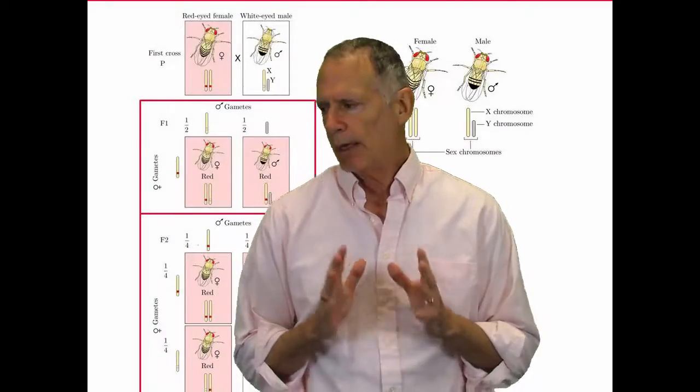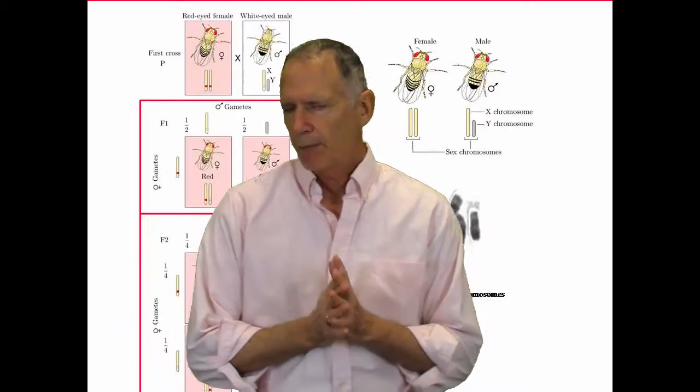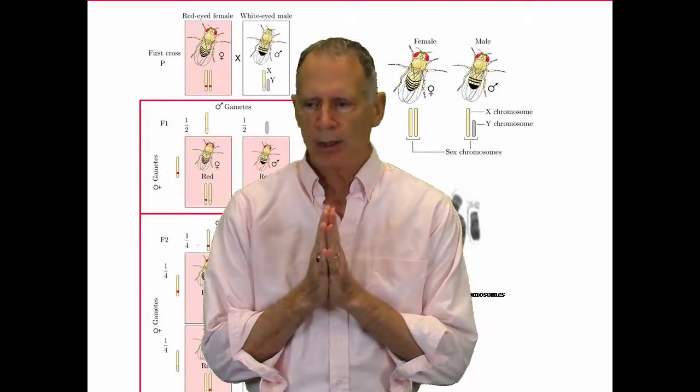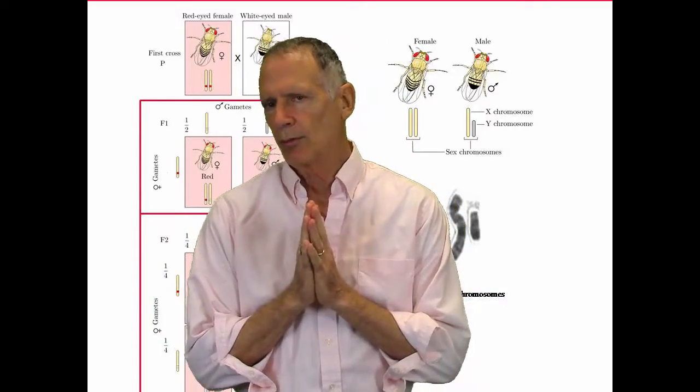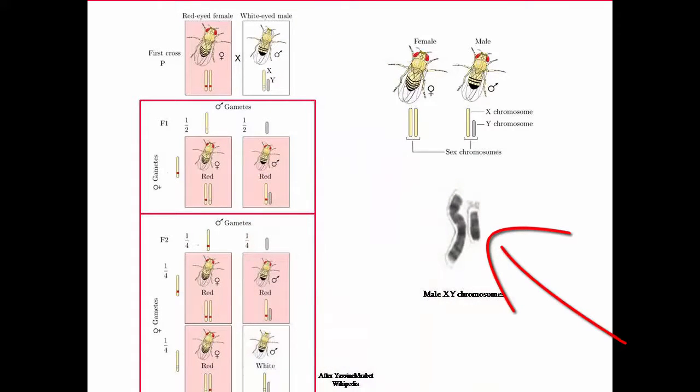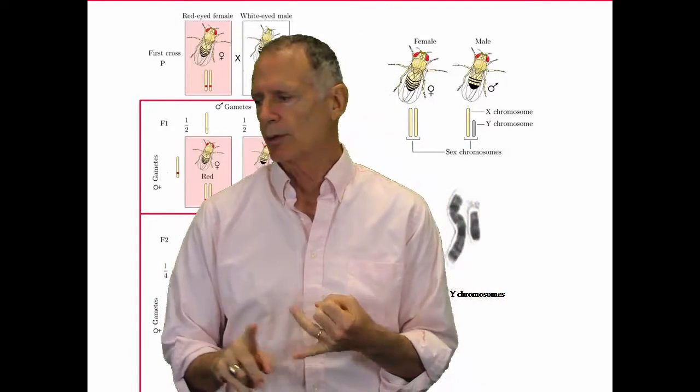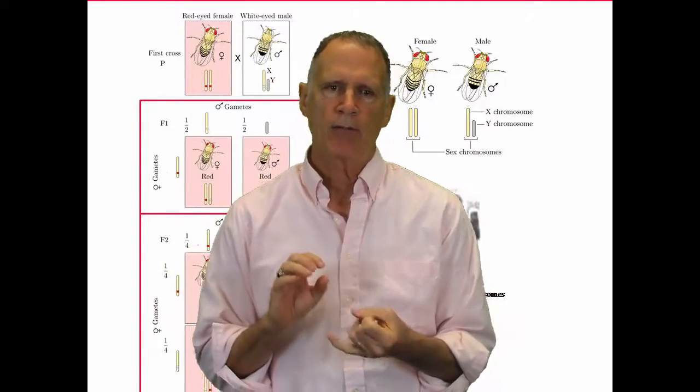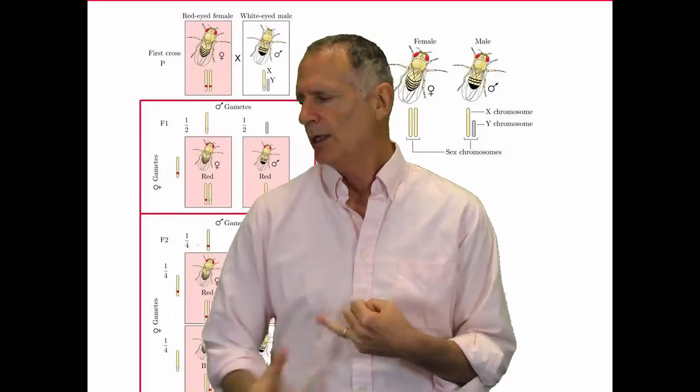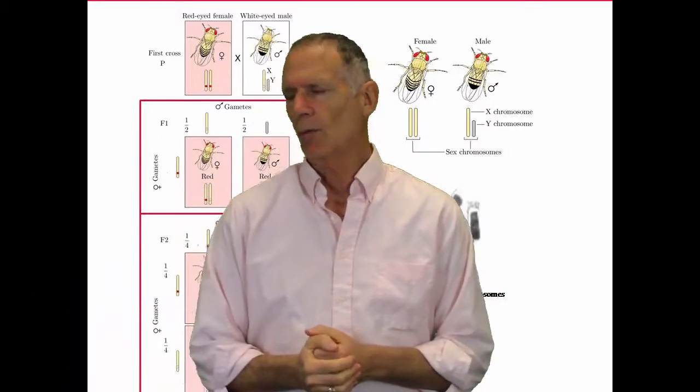Let's talk now about specifically what Morgan does. First of all, he realizes that the Y chromosome in males is smaller than the X chromosome. You know that females have two X chromosomes and males have a Y chromosome and an X chromosome.